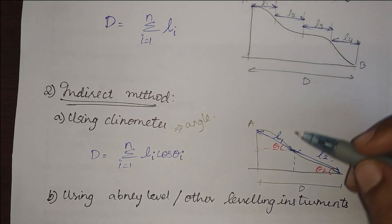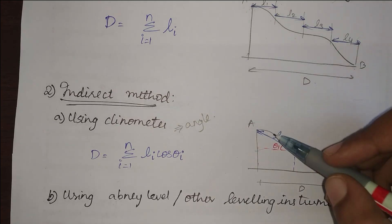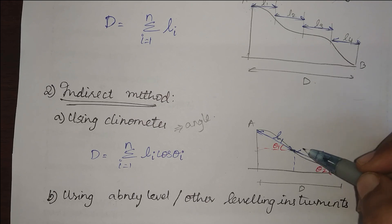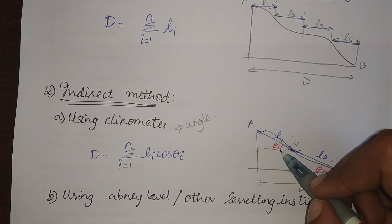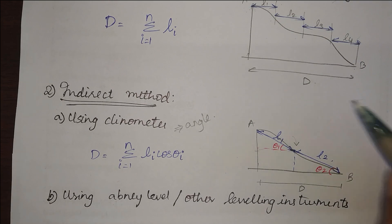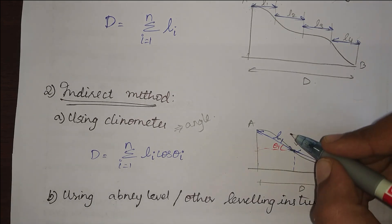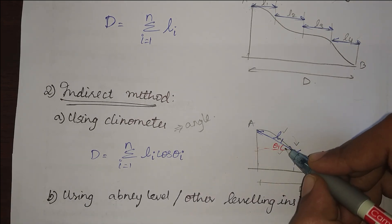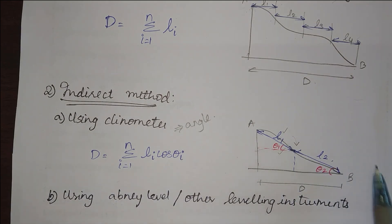What I'm going to do is I'm going to find the sloping distance and when my measurement has to break, when I have to take a break in my measurement, I will bring in my clinometer and find the angle that it makes with the horizontal. By doing this I will know at what distance what is the angle, and then I will repeat the same till I reach point B.